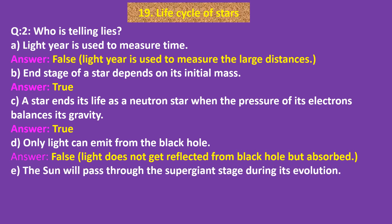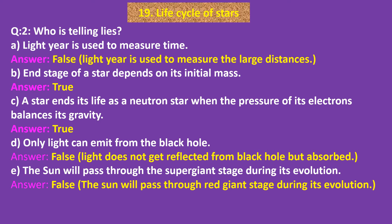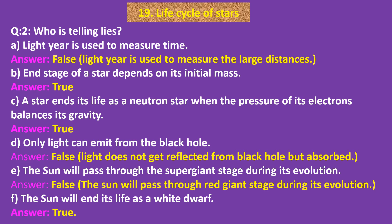E. The sun will pass through the super giant stage during its evolution. Answer: False. F. The sun will end its life as a white dwarf. Answer: True.